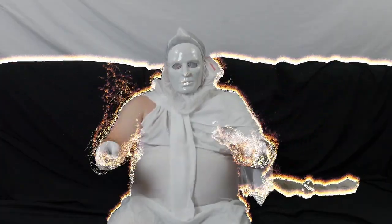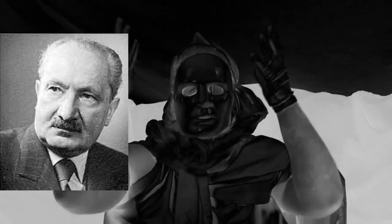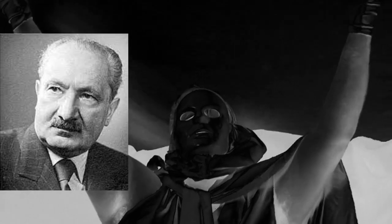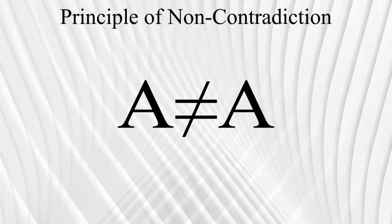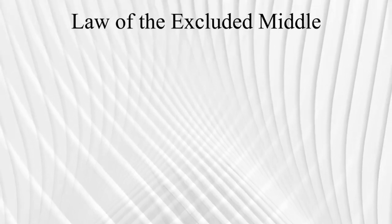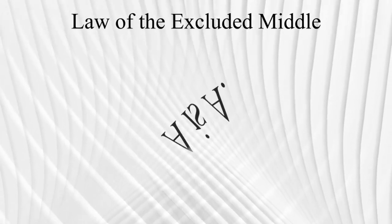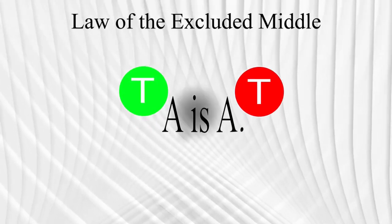Yet despite its triviality, it is necessarily true. There is no situation where it isn't the case that A is equal to all other A's. According to 20th-century German philosopher Martin Heidegger, it is the highest principle of thought. From the principle of identity springs the principle of non-contradiction, which states that A cannot both equal itself and that which is not A. We also get the law of the excluded middle, which states that for every statement — A is A — it must be either true or false, otherwise it is meaningless.